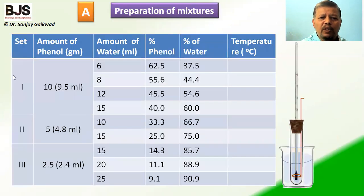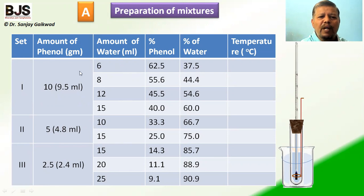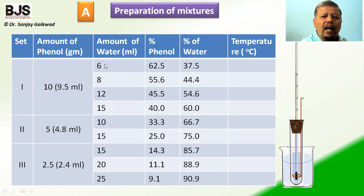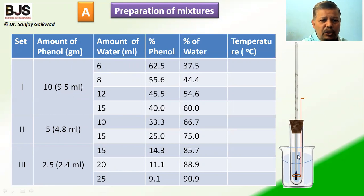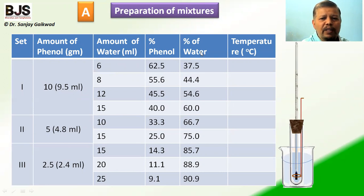In the first part, we are making three sets with different amounts of phenol and water. In the first set, we take 10 grams of phenol — that is 9.5 ml of phenol measured using a measuring cylinder — and we add 6 ml of water into the hard glass tube. The percentage of phenol is 62.5% and water is 37.5%.